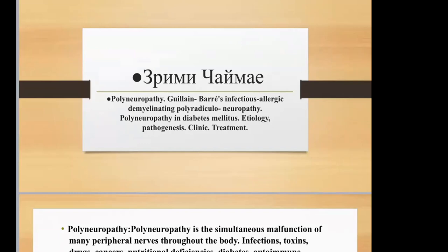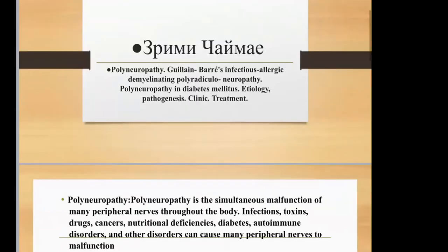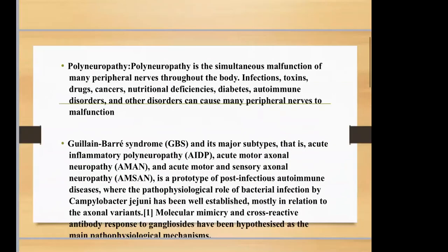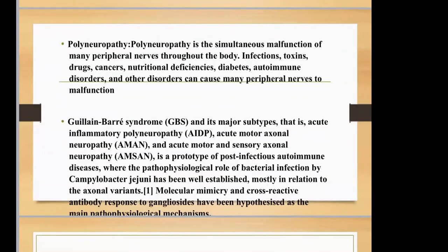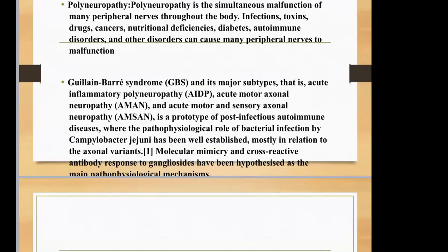Today we will talk about polyneuropathy — the simultaneous modification of many peripheral nerves throughout the body. Infections, toxins, drugs, cancer, nutritional deficiencies, diabetes, autoimmune disorders, and other conditions can cause dysfunction of many peripheral nerves. An example is Guillain-Barré syndrome.